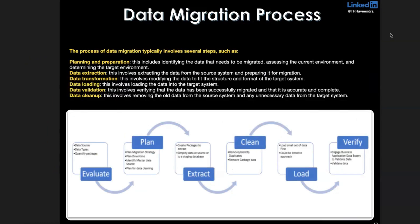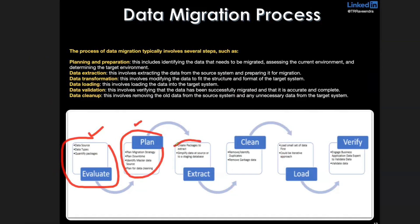In any data migration project — on-premises to cloud, on-premises to on-premises, or cloud to cloud — the process starts with evaluation: identifying how many sources there are, how much data, how many tables, and the business data involved. Then comes analysis, planning, and migration strategy — historical migration strategy and incremental migration strategy. After that, we identify master data and transaction data, extract historical data, clean it, load it into the target data warehouse, and then verify and validate the data.